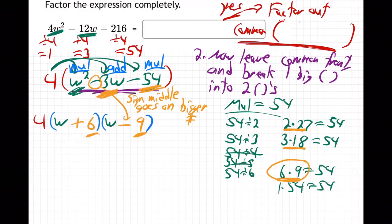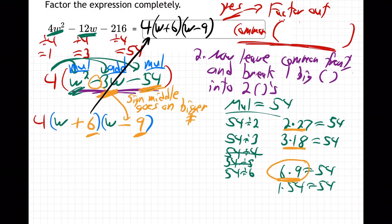That's our answer — we are done. The four has to stay in the front; that's what we did in step one. Then we have w plus six and w minus nine. You could switch the order of the parentheses — put the minus nine first and the plus six second — but wherever the nine is, it has to be negative, and wherever the six is, it has to be positive.